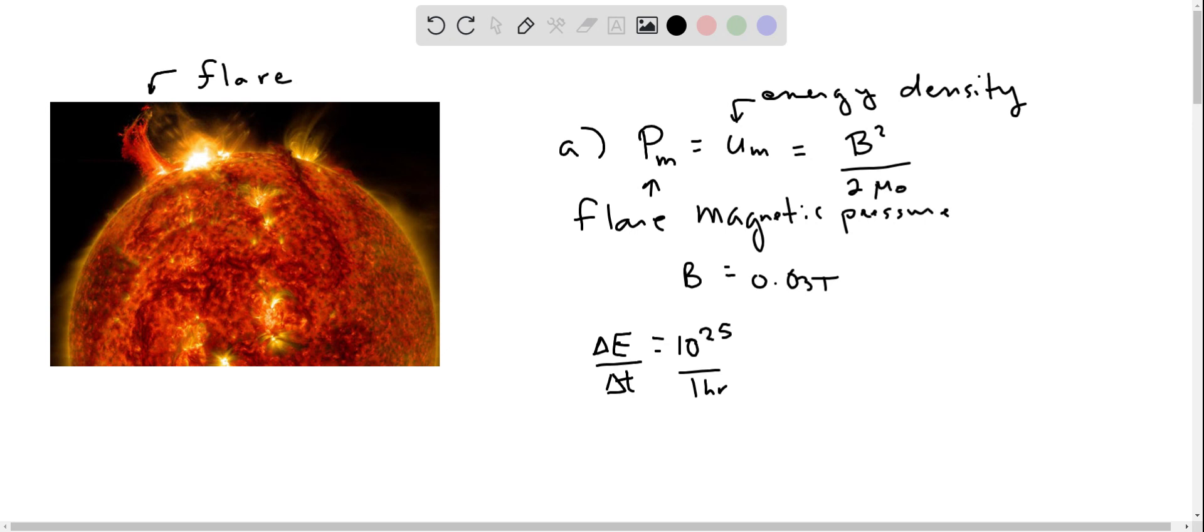So we can find the energy density inside of the magnetic field. This is 0.03 Tesla squared, and we'll have to divide by twice mu naught, which is the permeability of free space, four pi times 10 to the minus 7. The units will be joules per cubic meter. So that turns out to be 360 joules per cubic meter, which is a reasonable amount.